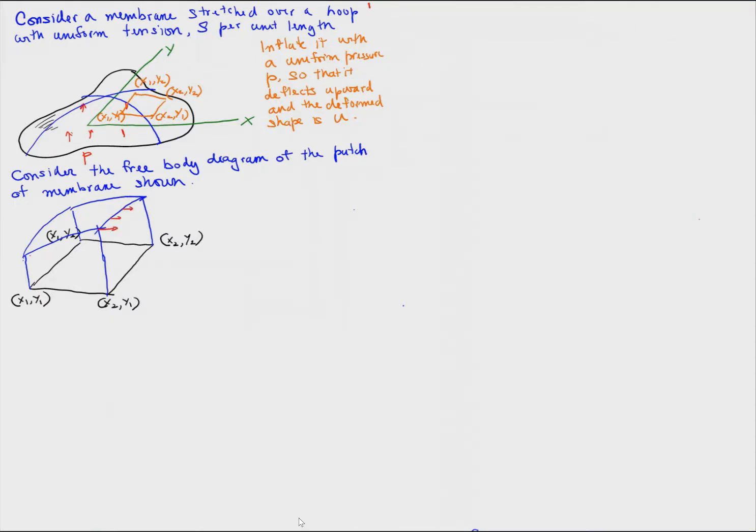So the forces on this are the membrane tensions on all four sides, which are now at an incline because the membrane is deflected, and the inflating pressure in the middle. So let's call the sides of the patch A, B, C, D for reference.